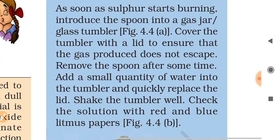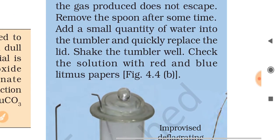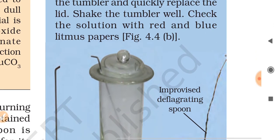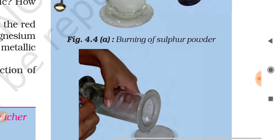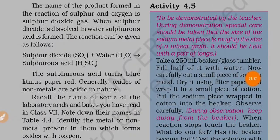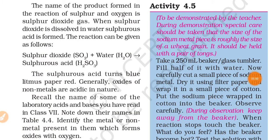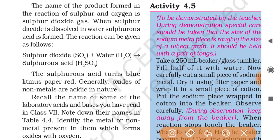Now what you have to do: as soon as the sulfur starts burning, introduce the spoon into a jar or glass tumbler. Cover the tumbler with a lid to ensure that the gas produced does not escape. Remove the spoon after some time. Add a small quantity of water into the tumbler and quickly replace the lid. Shake the tumbler well. Check the solution with red and blue litmus papers. The name of the product formed in the reaction of sulfur and oxygen is sulfur dioxide gas.